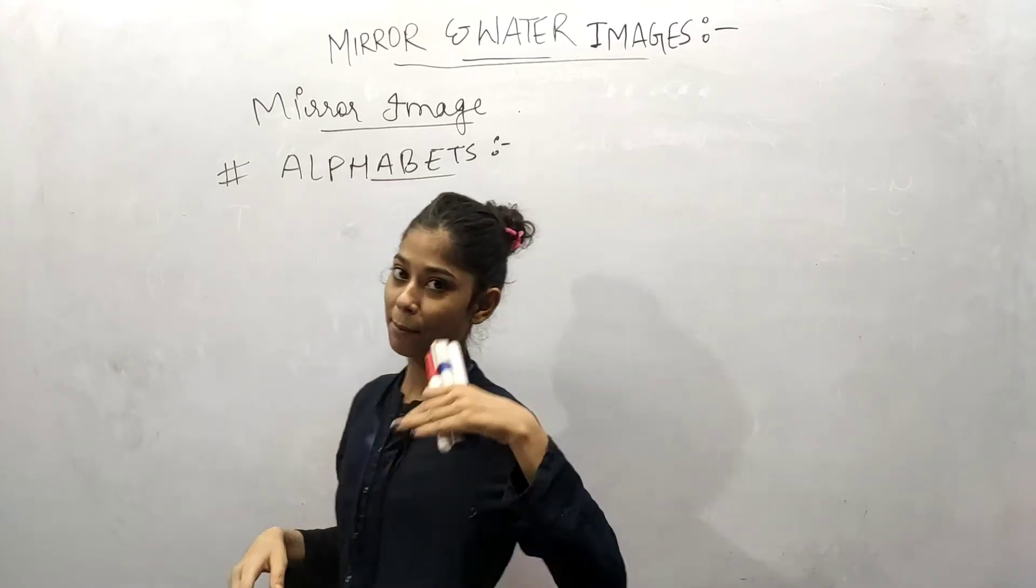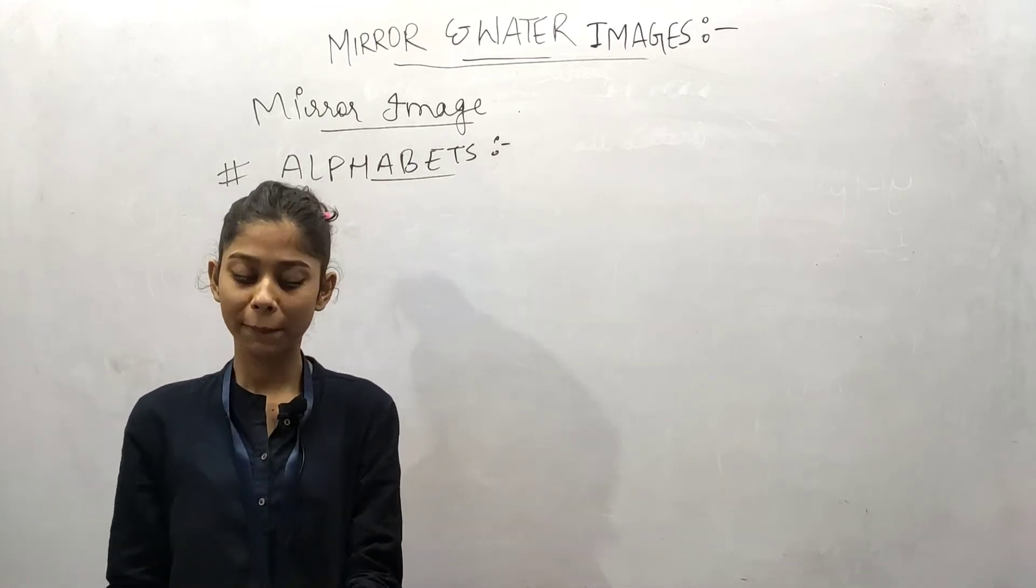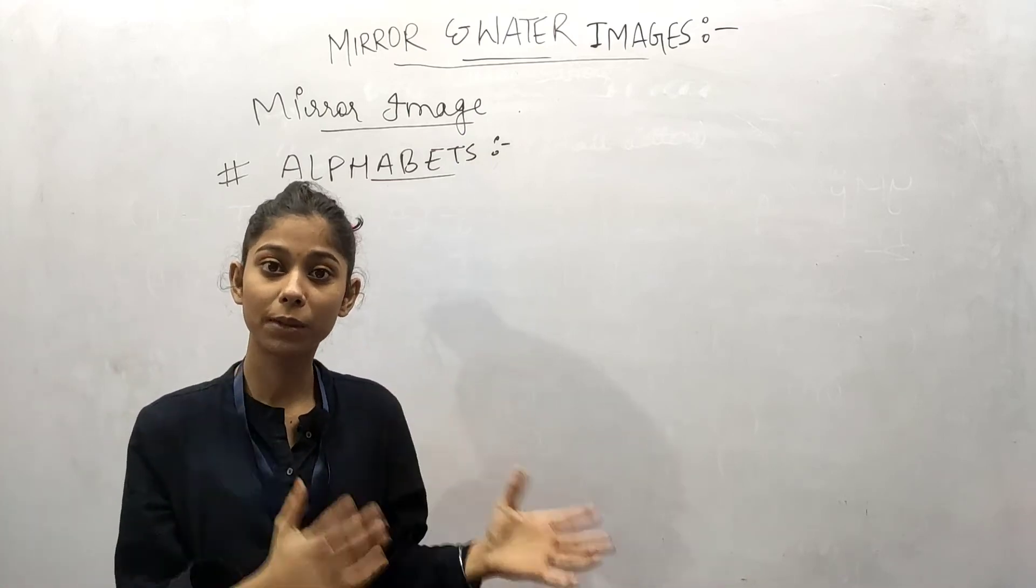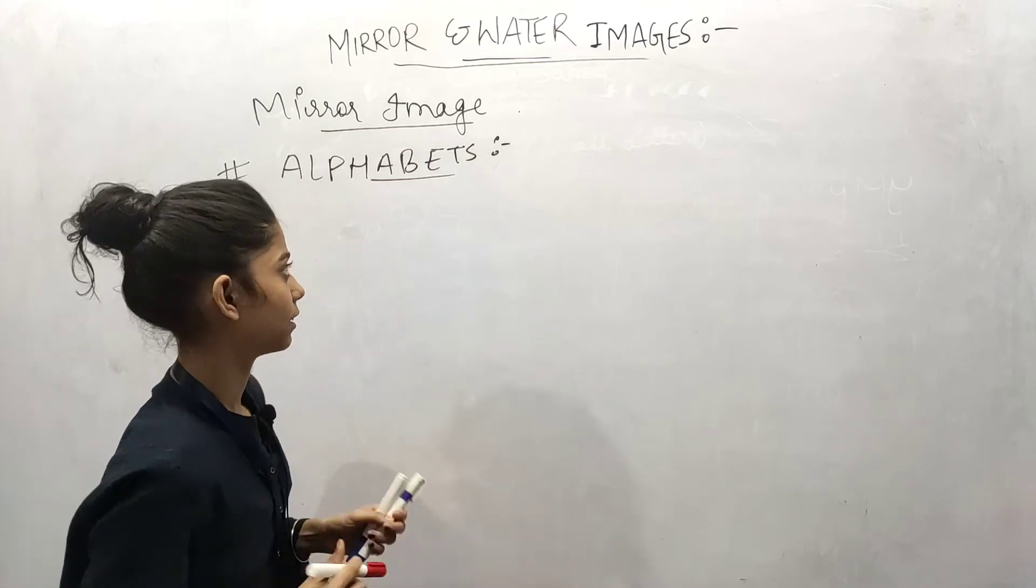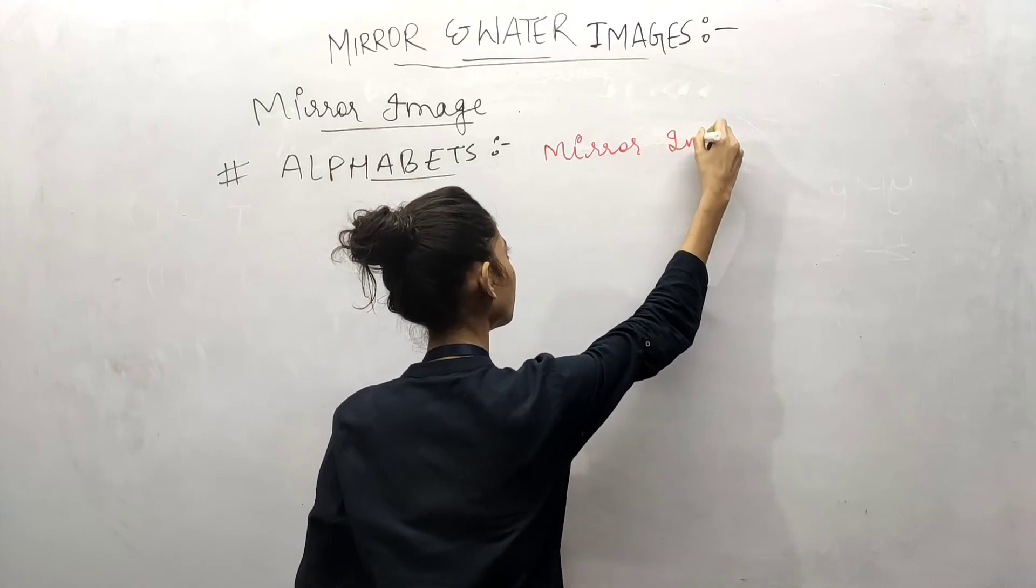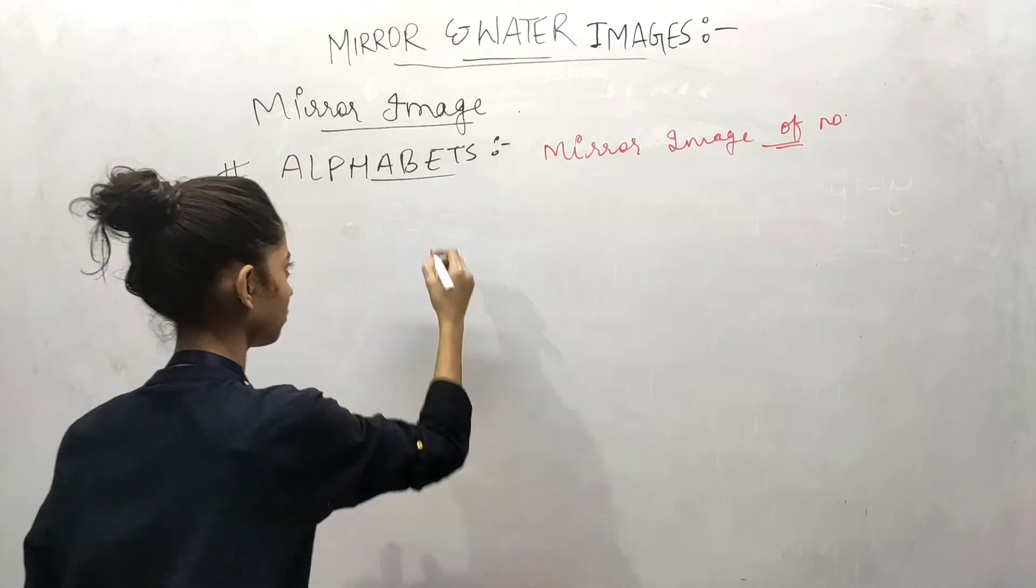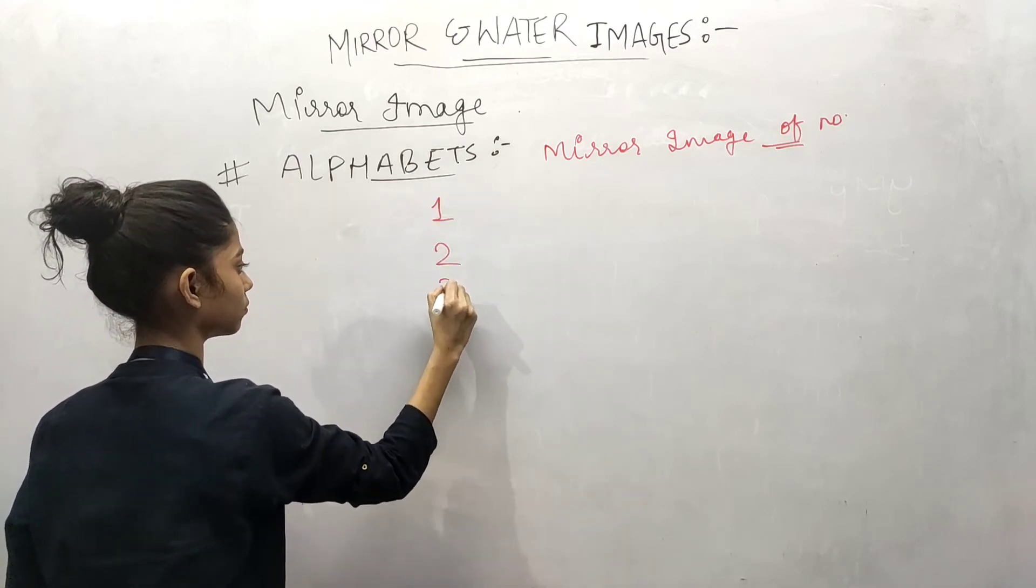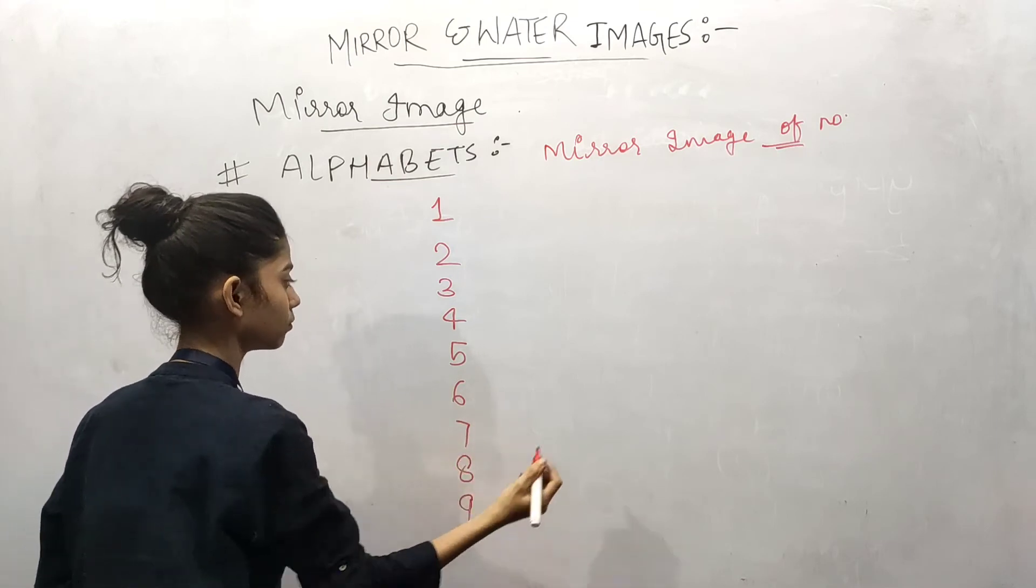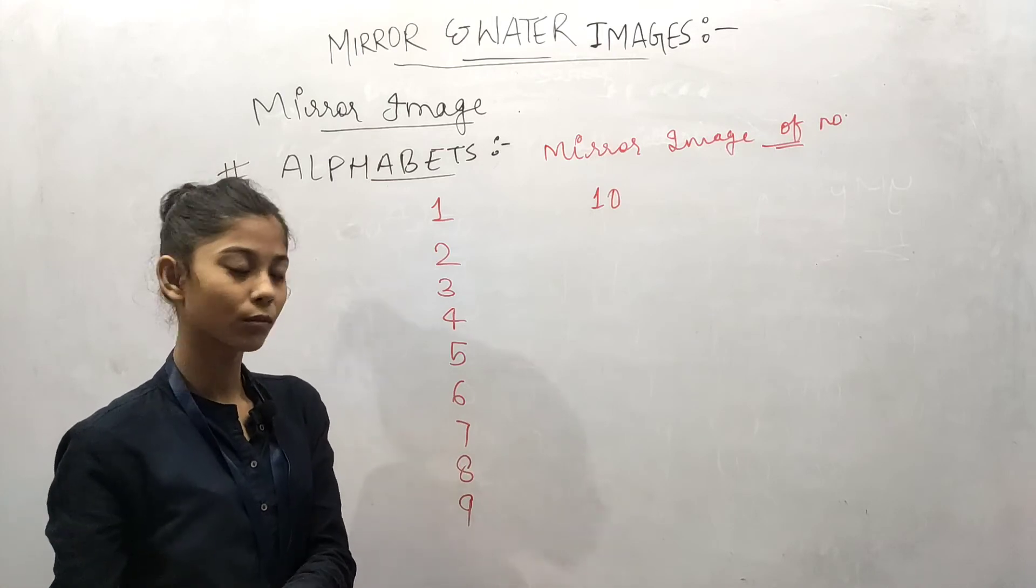So we have seen mirror image of capital letters and small letters. Now we have seen numbers. It means when letters come, you will know how the image is formed. But when numbers come, what happens, it looks like this.